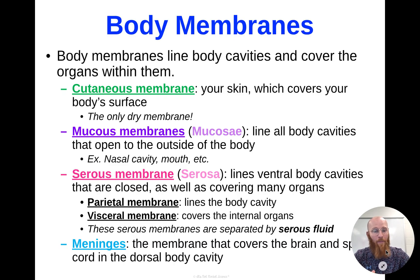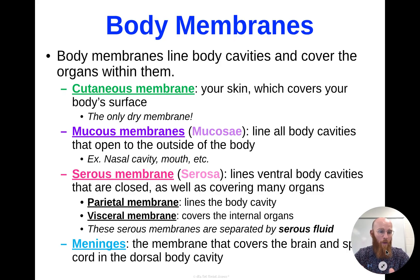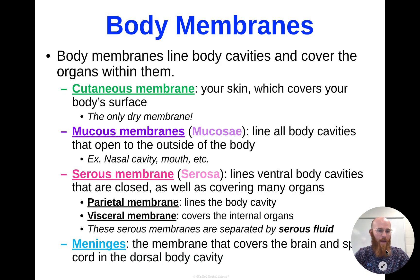Serous membranes are often separated by serous fluid, which prevents friction whenever they slide and shift together — we don't want friction damaging our tissues and organs. Serous fluid is also really good for nutrient exchange between tissues. Finally, we've got our meninges, which specifically refers to the membrane covering the brain and spinal cord in your dorsal body cavity. That's more than enough to go off for now — we've had exposure to all of our body sections and planes, body cavities, and membranes, and we'll be referring to these a lot as we go into each of our organ systems. That'll do it for section 2c — we'll see you at the next one.